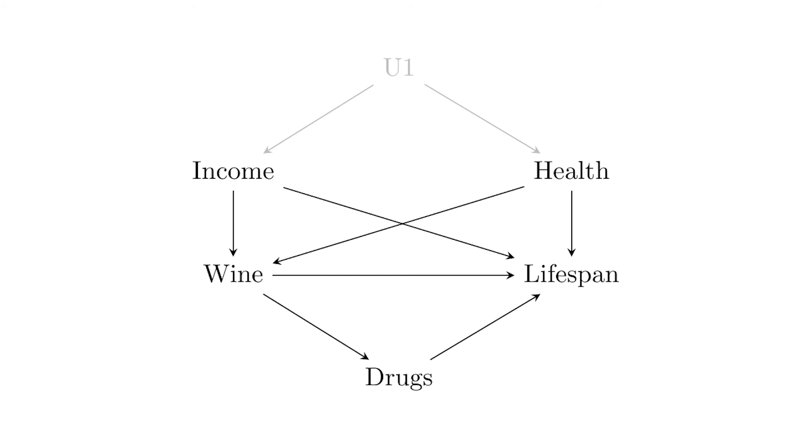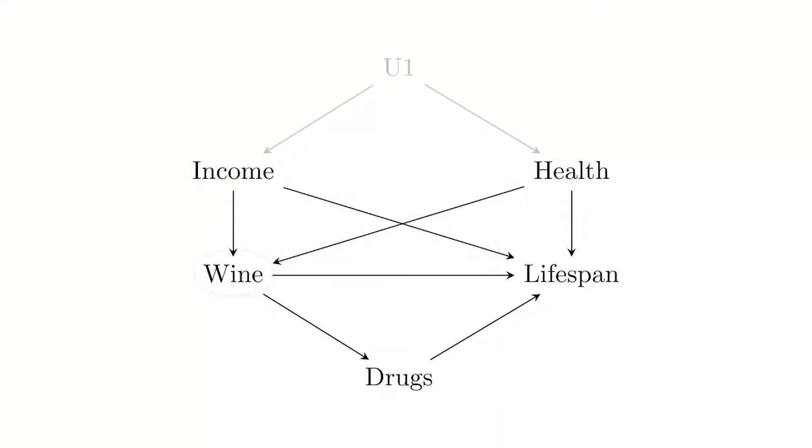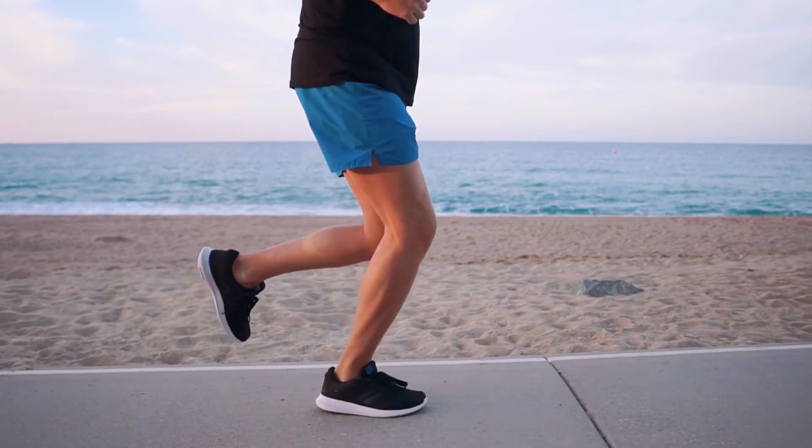Welcome back to The Effect. In the last video we talked about the different pathways that we can walk on a causal diagram. Any way that you can walk along a causal diagram from a treatment to an outcome will be a reason why those two variables are related in the data. Some pathways are good — we want to preserve and identify the effects of those, usually the front door paths going from treatment to outcome. Others are bad paths that we need to shut down.